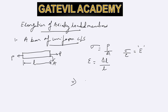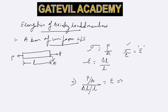By substituting the values of stress and strain, we'll have P by A divided by delta L by L, which is equal to E. By rearranging, we can get the value of delta L, which is the elongation in the bar due to load P, which comes out to be PL by AE.